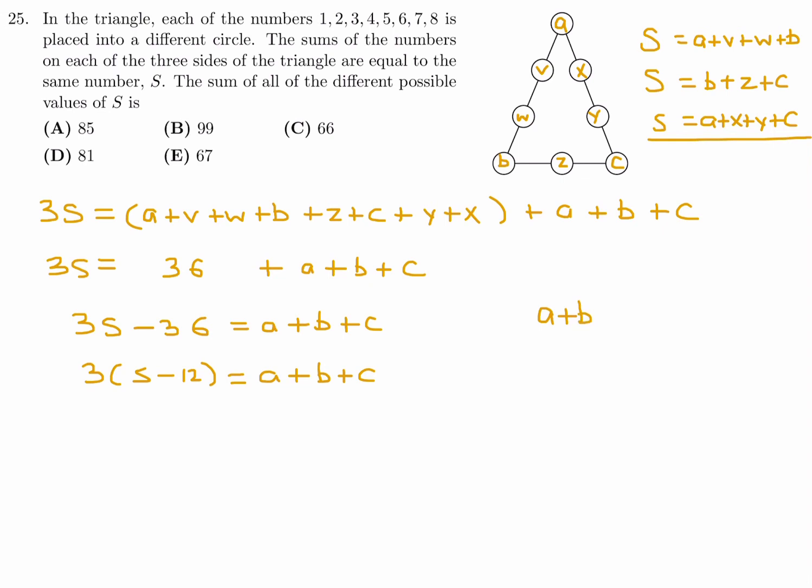So A plus B plus C, what are the possible multiples of 3? Well, the smallest it could possibly be is 6, 1, 2, 3. So 6, obviously, 9, 12, 15, 18, 21. What's the largest it could be? 6, 7, and 8, which would make it 21. So that's it. This is the range.